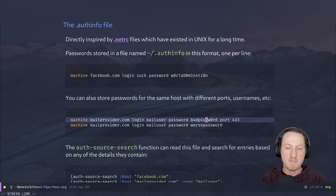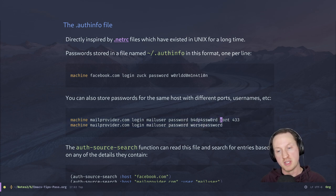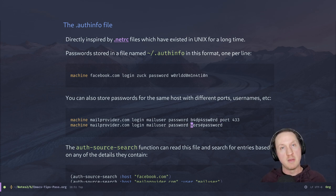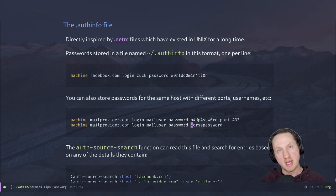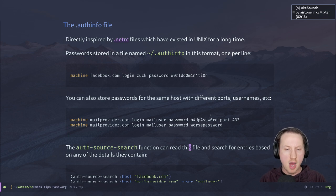Another interesting thing about this format is that you can store passwords for the same host but with different ports or different usernames. So you can have multiple lines for the same host — say mailprovider.com — with the same username but different passwords for different ports. For instance, port 443 for secure SMTP might have a different password. The auth-source library is able to query for these configurations using query parameters in the auth-source-search function.